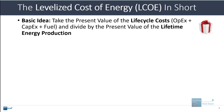The basic idea with the levelized cost of energy is to take the present value of the life cycle costs of an asset — such as a solar plant, a wind farm, or a nuclear power plant — and then divide that by the present value of the lifetime energy production from that asset. These life cycle costs always include operating expenses and the initial capex to construct it, and for something like a nuclear, gas, or coal plant, you also include fuel costs.